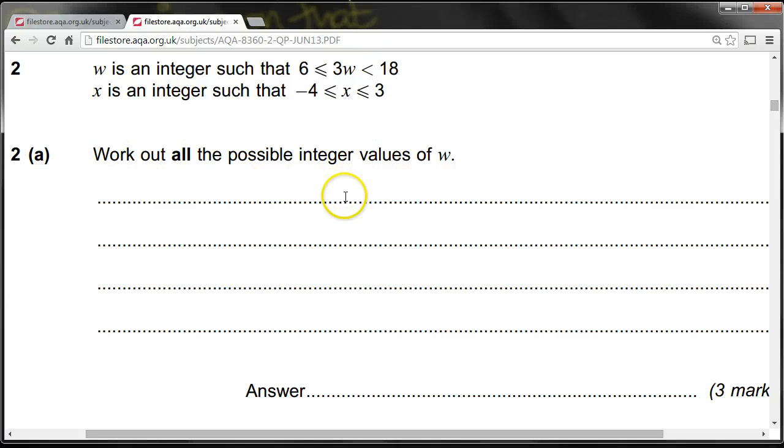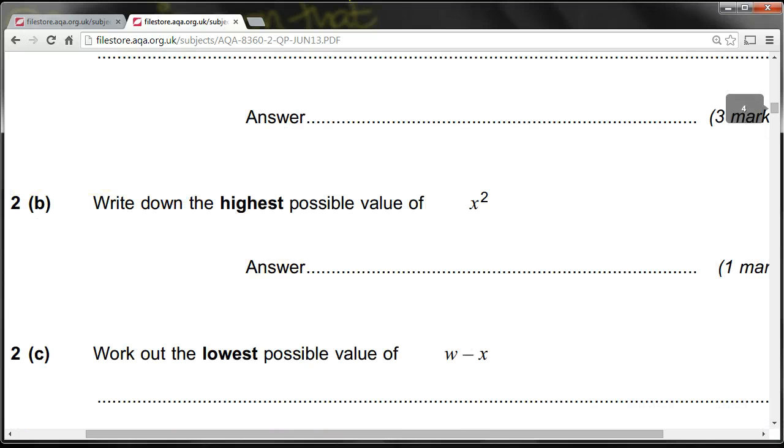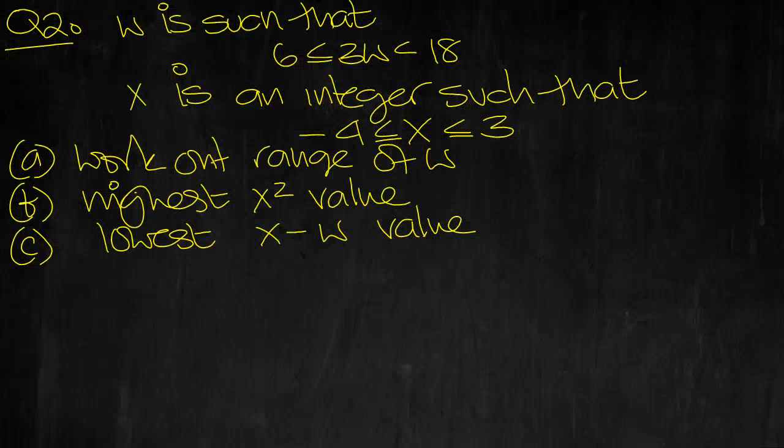OK, here's the question then. There's a part b and c. OK, so it was w minus x. It helps if I write the question down correctly, doesn't it?